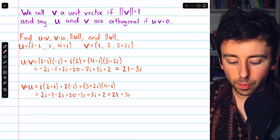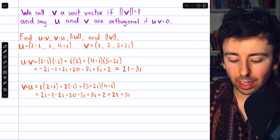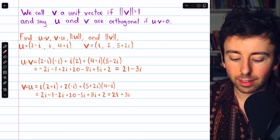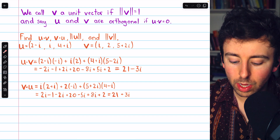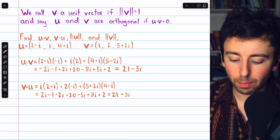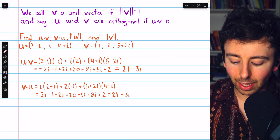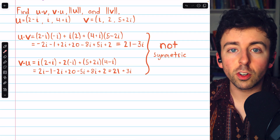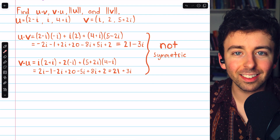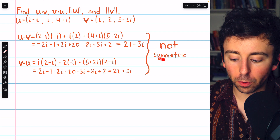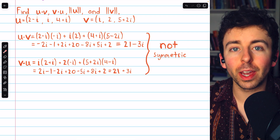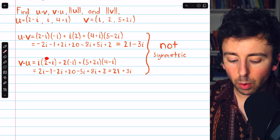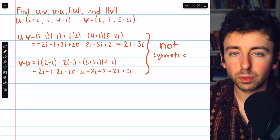And here is v dot u. Since u is second, it's the components of u that we take the conjugate of. So instead of 2 minus i we have 2 plus i; instead of i we have negative i; instead of 4 plus i we have 4 minus i. On the left we just have the components of v. Doing all of the multiplication and simplifying, we have 21 plus 3i. Importantly, the symmetric property that the real dot product has is not shared by the complex dot product — the order here does matter. When we do u dot v we're taking conjugates of the components of v, but when we do v dot u we're taking conjugates of the components of u.